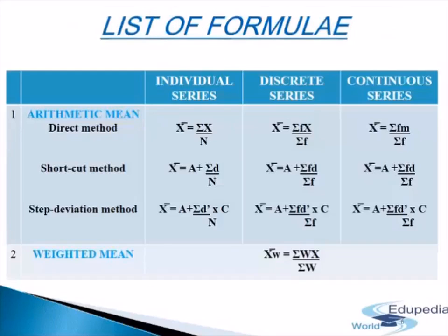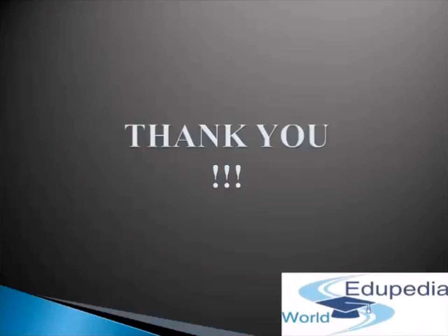In the summary table, we can see the list of formulas discussed in this chapter regarding arithmetic mean. Arithmetic mean can be calculated using three methods: direct method, shortcut method, and step deviation method. Each method can be used for individual series, discrete series, and continuous series. We have discussed all formulas regarding arithmetic mean and weighted mean. Thank you for watching Edupedia World videos.